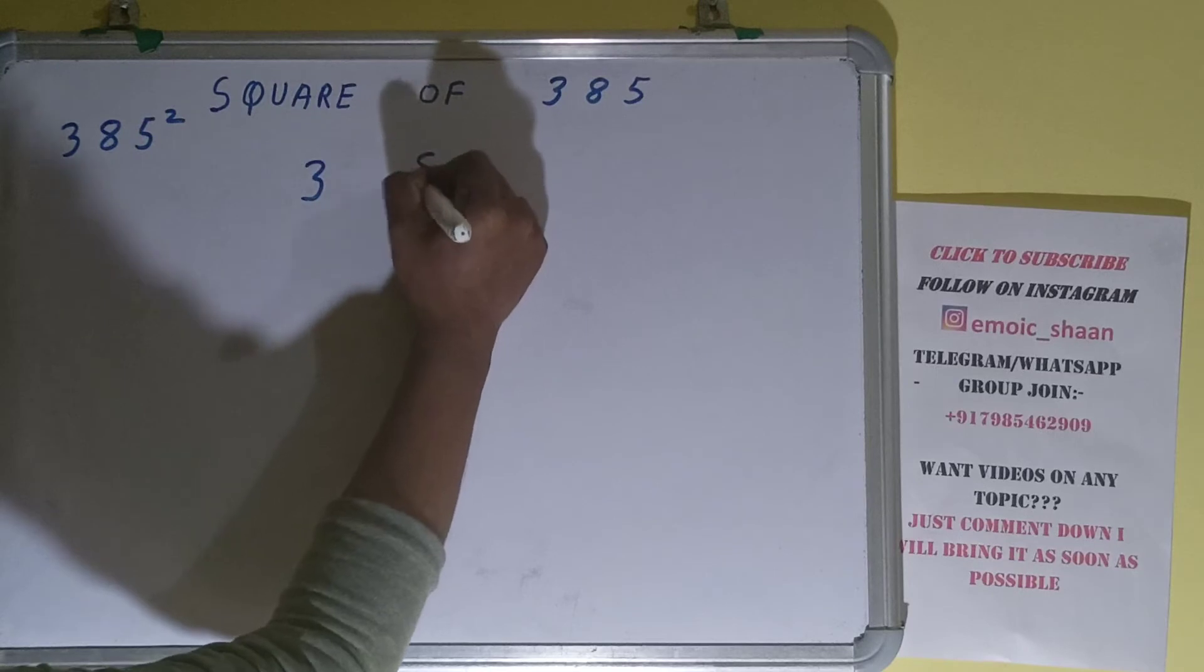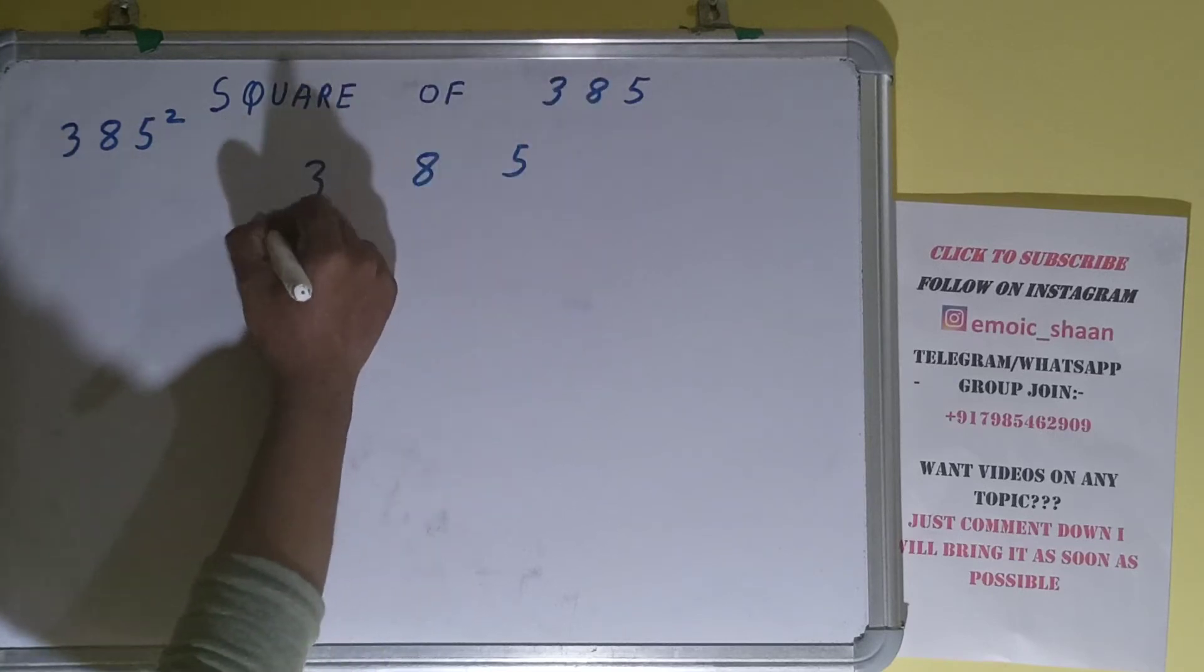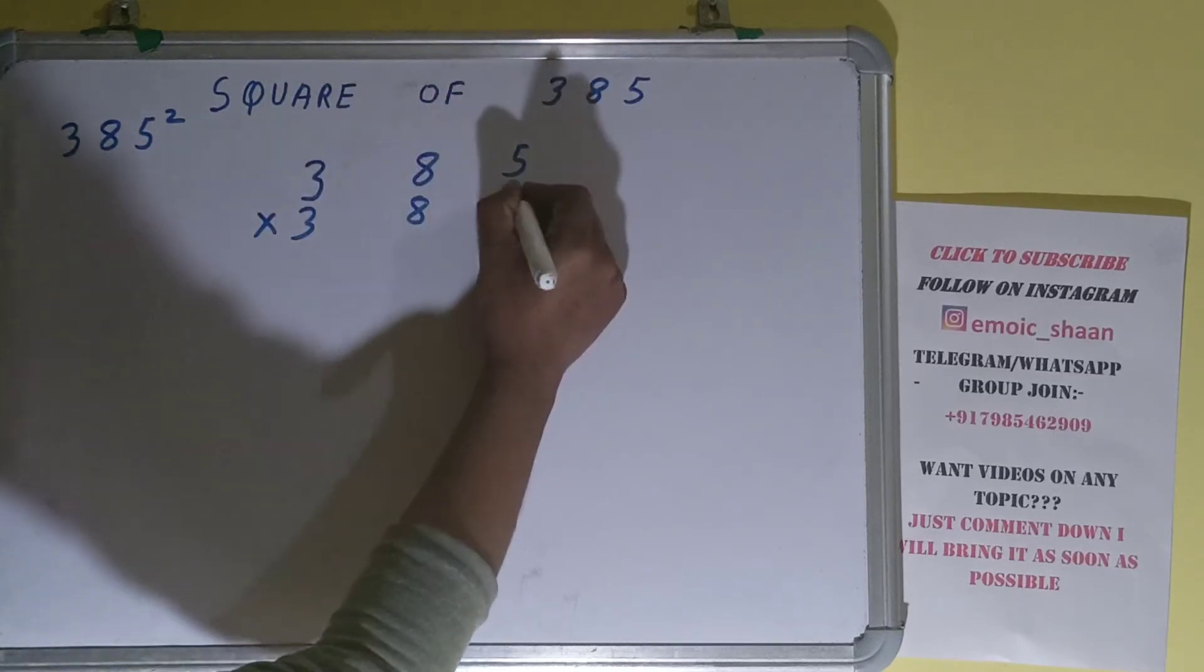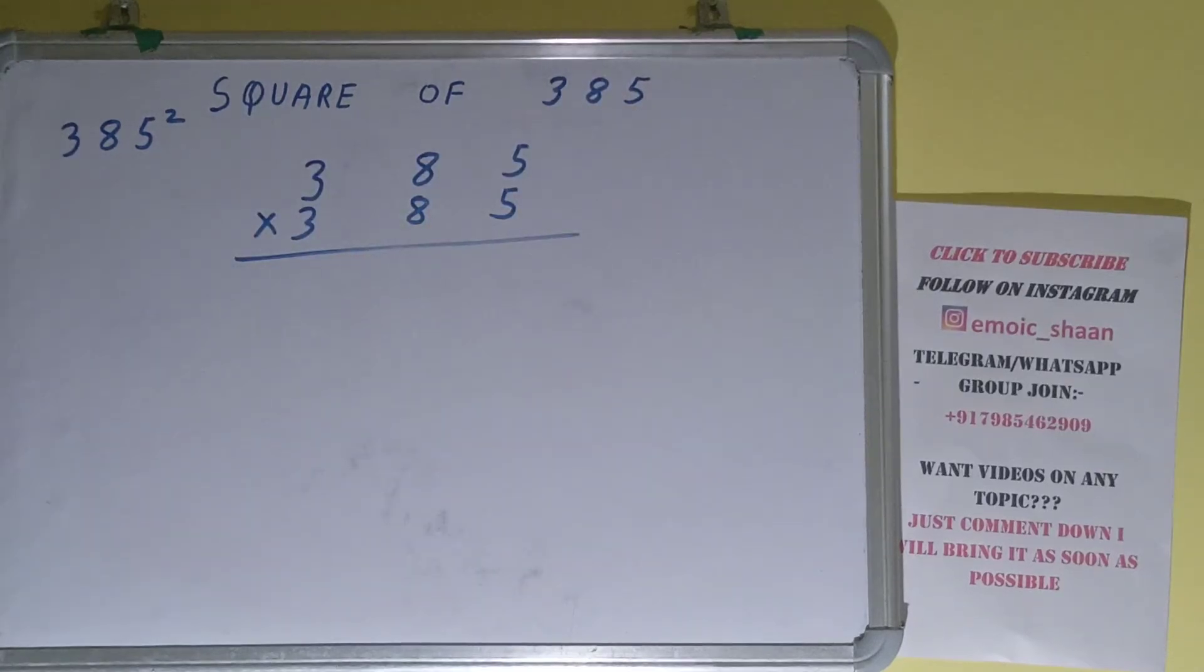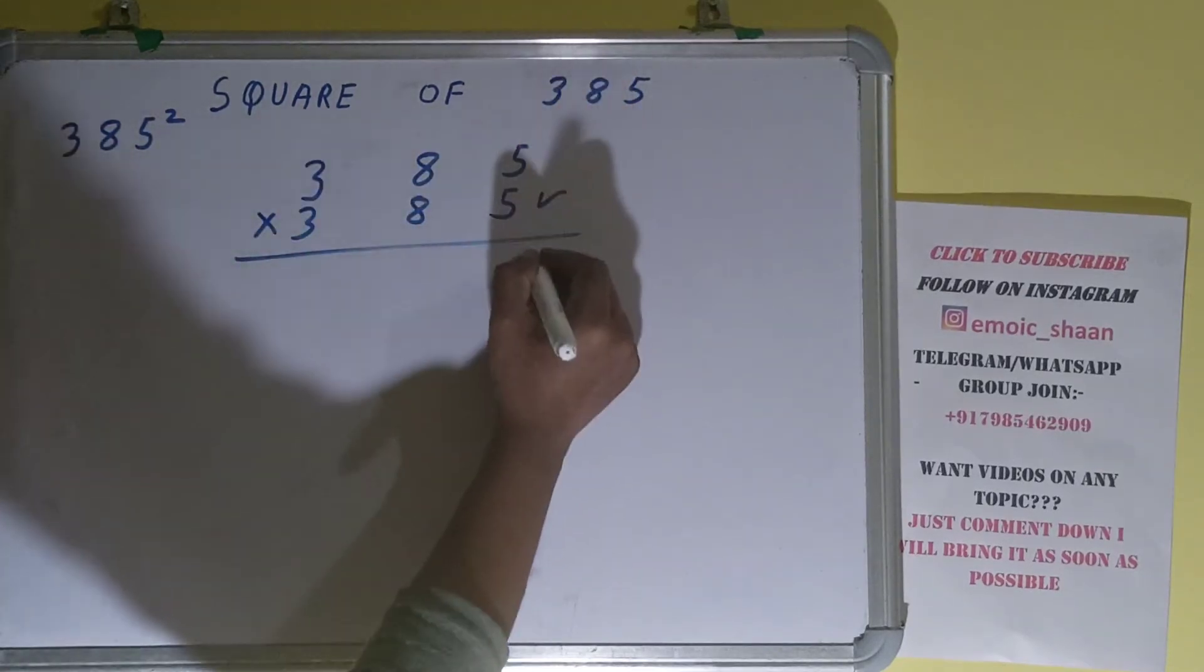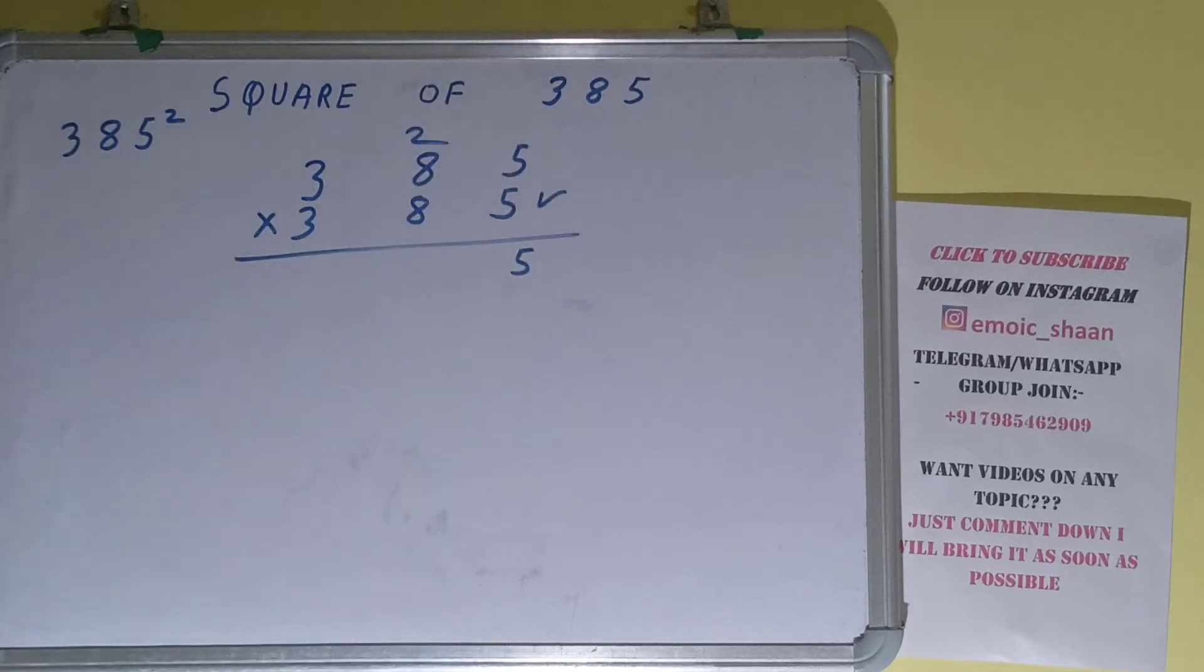Here is 385. To find the square of it we need to multiply by itself, that is 385, and do normal multiplication. Let's start with this: 5 times 5 is 25, 2 carry. 5 times 8 is 40 plus 2 is 42.